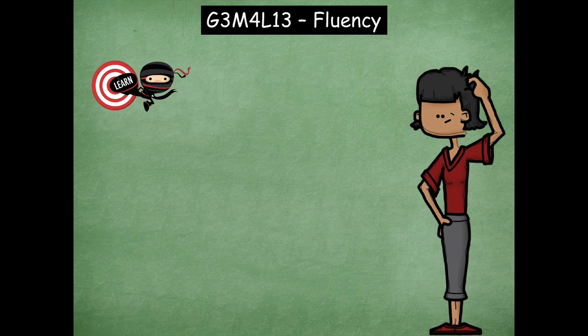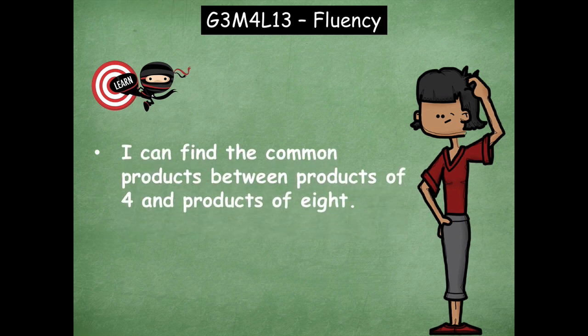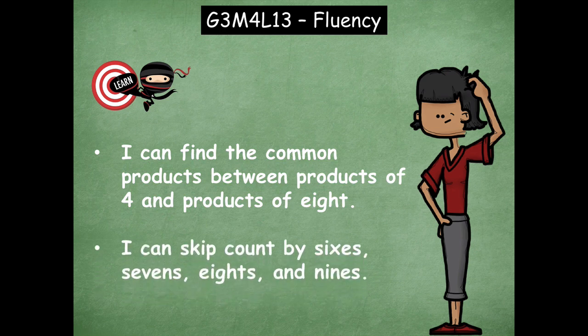Today for our fluency lesson, we're going to focus on two activities. The first one has to do with finding the product and seeing how we can find common products between two factors. The other one is we're going to practice with our skip counting again. Our learning goals for today are: I can find the common products between products of four and products of eight, and I can skip count by sixes, sevens, eights, and nines.